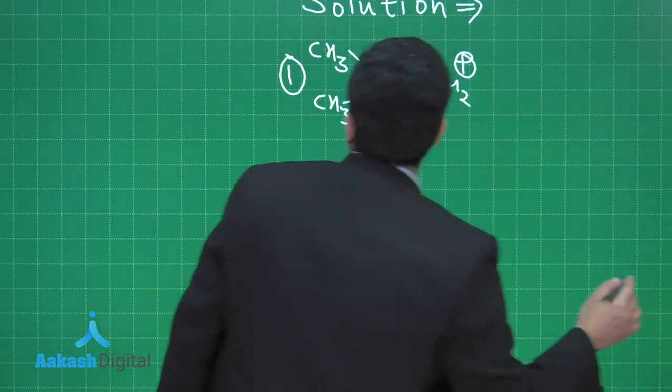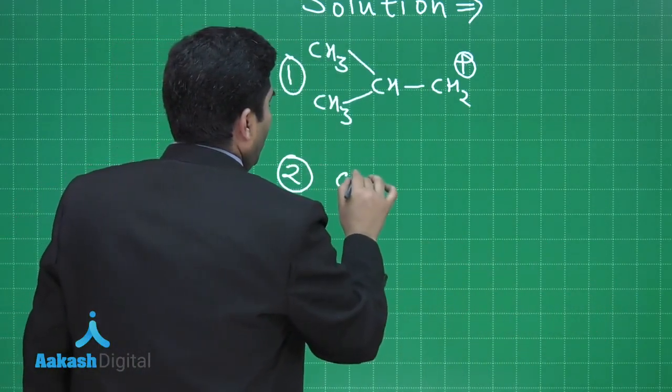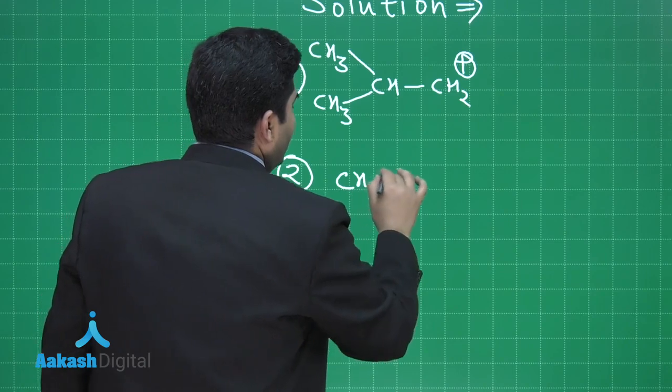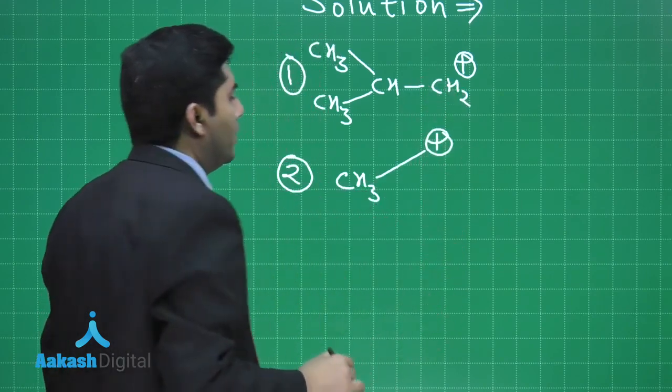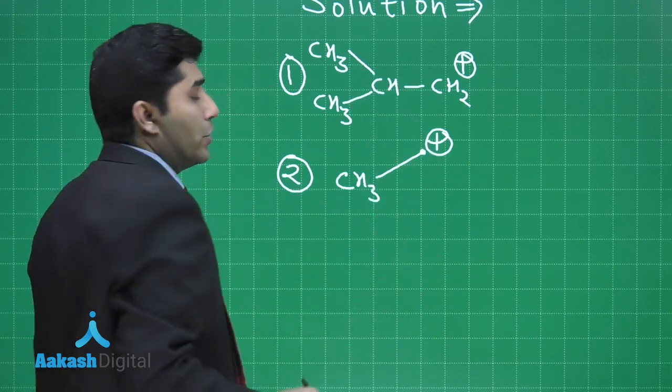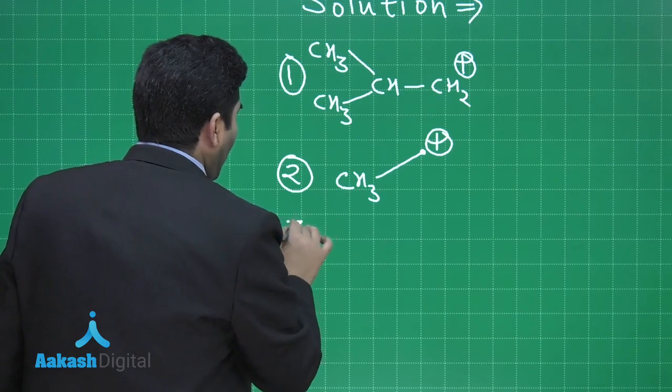The second one will be CH3 and when Cl will go out, positive charge will be there. There is one carbon atom here, so it is also the primary carbocation.